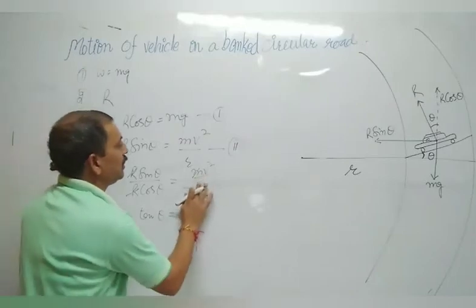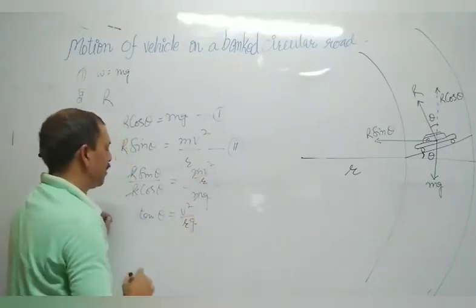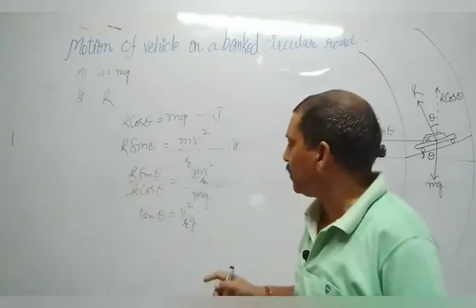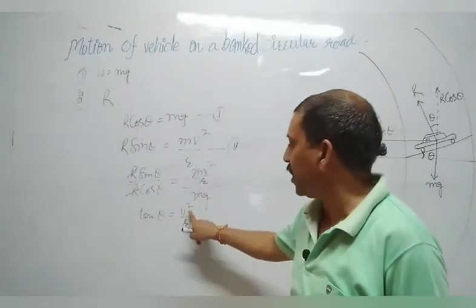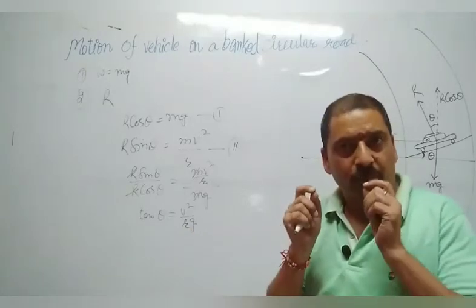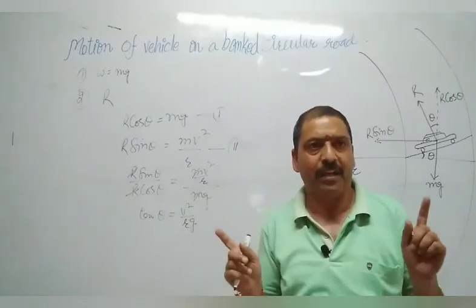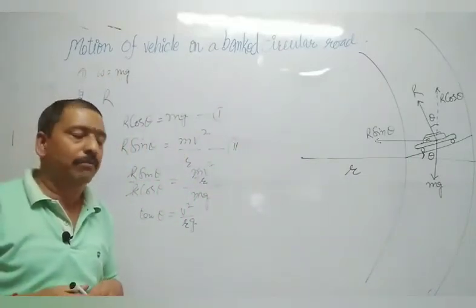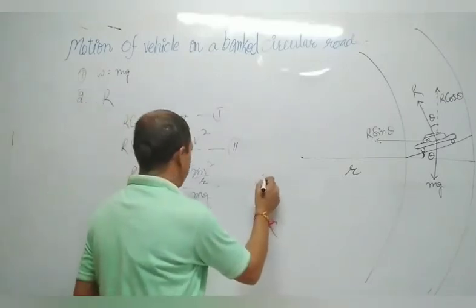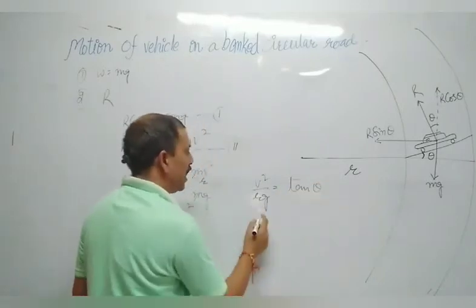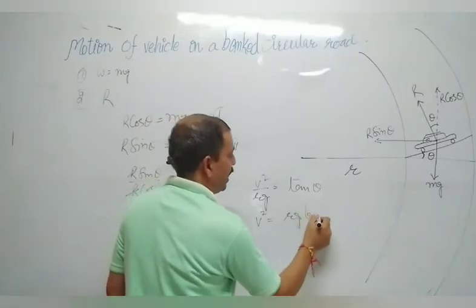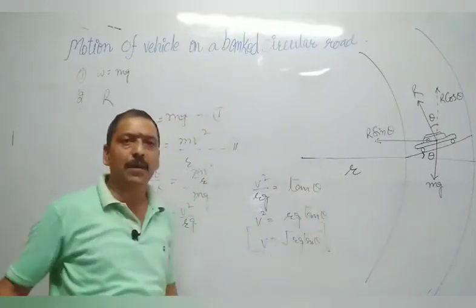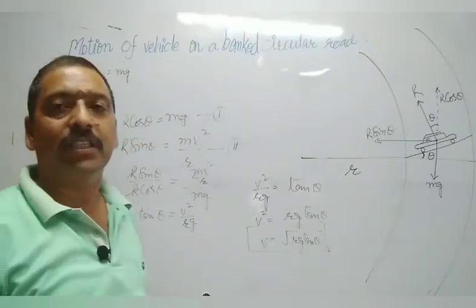From tan θ = v²/(rg), we get v² = rg tan θ. Therefore, the maximum velocity of the car on a banked road is v = √(Rg tan θ). If the velocity is less than or equal to this value, the vehicle can safely turn on the banked road.